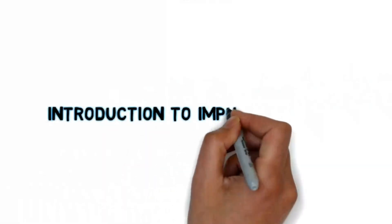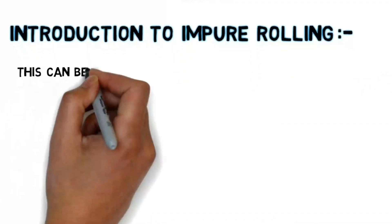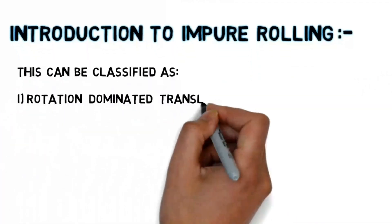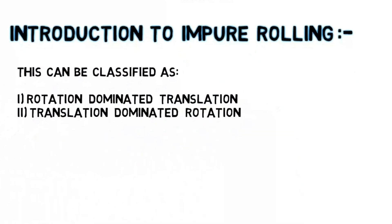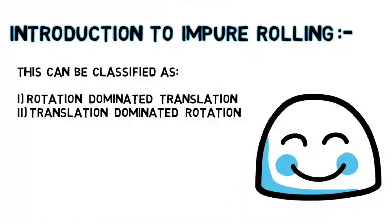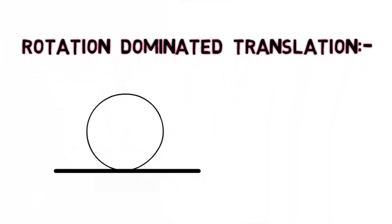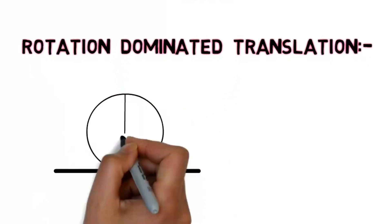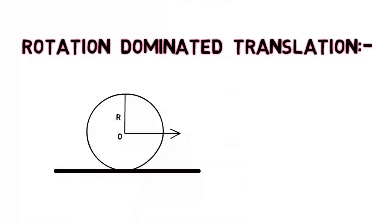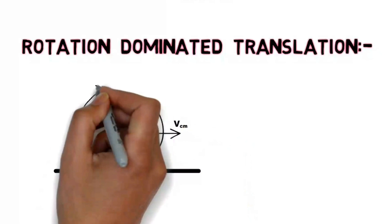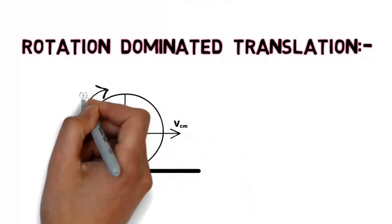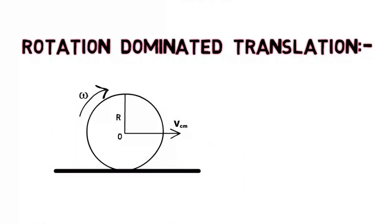Today we will discuss impure rolling. For impure rolling we have rotation dominated translation or translation dominated rotation. For rotation dominated translation it can be a disc, a cylinder, a ring, or maybe a sphere. Its center of mass has a velocity v in the forward direction and it has an angular velocity about the center of mass as well.